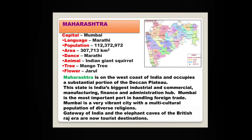Maharashtra — capital Mumbai. Maharashtra is on the west coast of India and occupies a substantial portion of the Deccan Plateau. This state is India's biggest industrial and commercial manufacturing, finance and administration hub. Mumbai is the most important port in handling foreign trade and is a very vibrant city with a multicultural population of diverse religions. The Gateway of India and the Elephanta Caves are now tourist destinations.